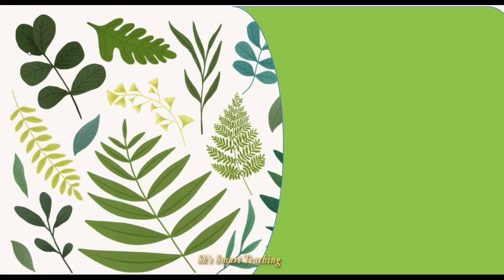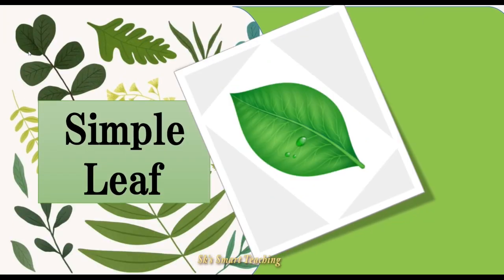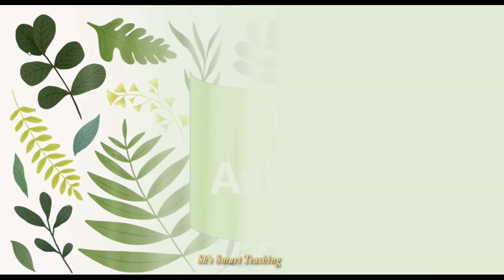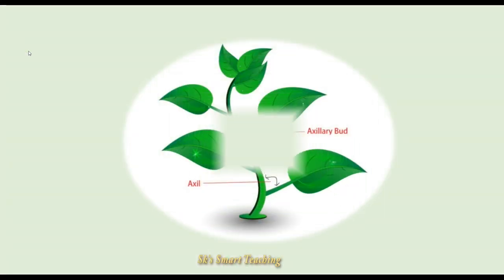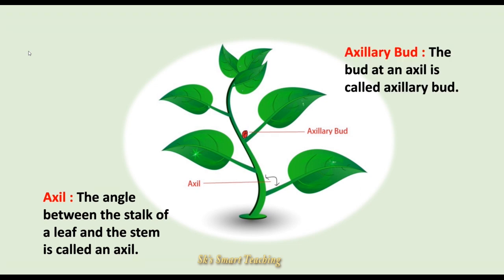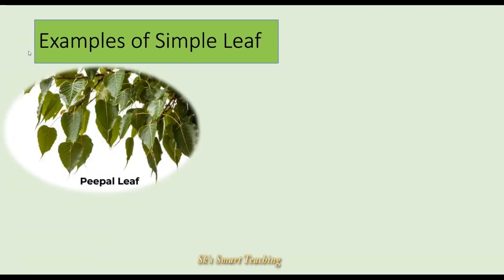A simple leaf has a single leaf blade and it has an axillary bud. The angle between the stalk of a leaf and the stem is called an axil. A bud, called an axillary bud, is usually present in the axil of a leaf.